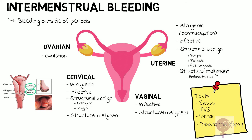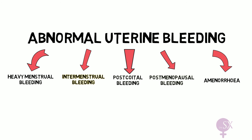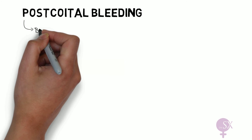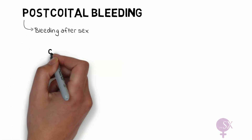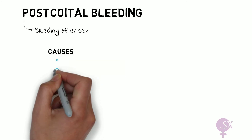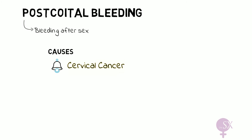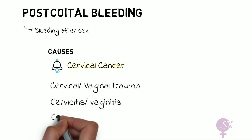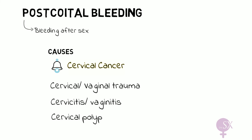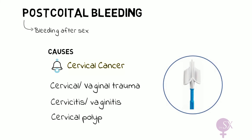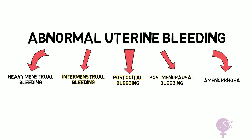Next we're going to discuss post-coital bleeding. PCB refers to bleeding after sexual intercourse. When a patient presents with PCB, alarm bells should ring and we should think about cervical cancer. Other causes include cervical or vaginal trauma, cervicitis, vaginitis, and a cervical polyp. PCB most of the time refers to a cervical pathology, therefore it's very important that we take a smear test in all of these patients.